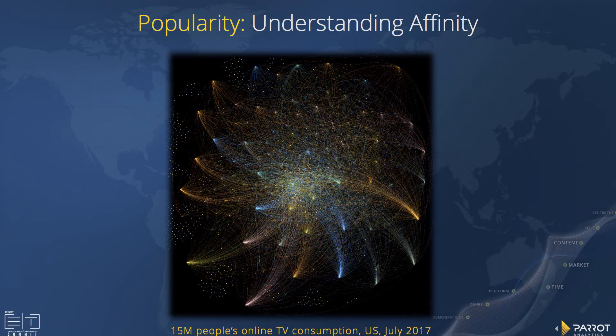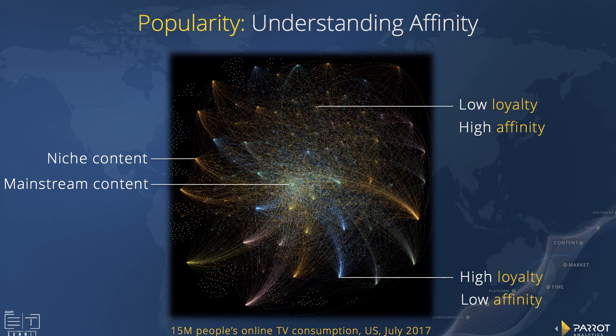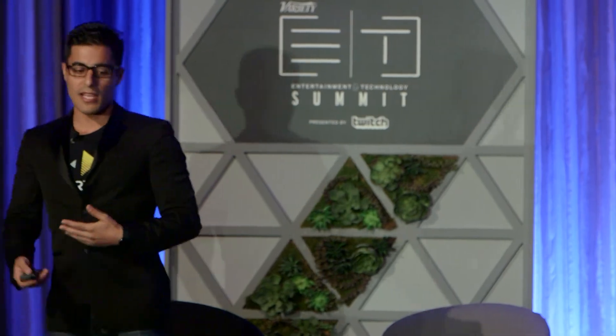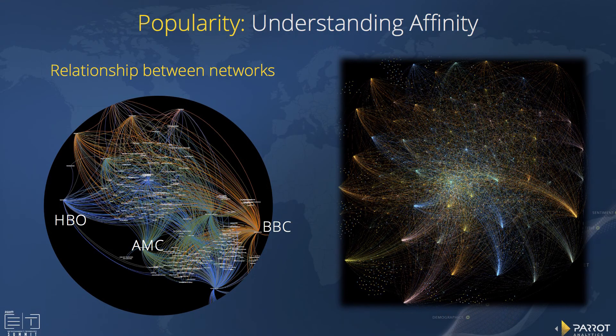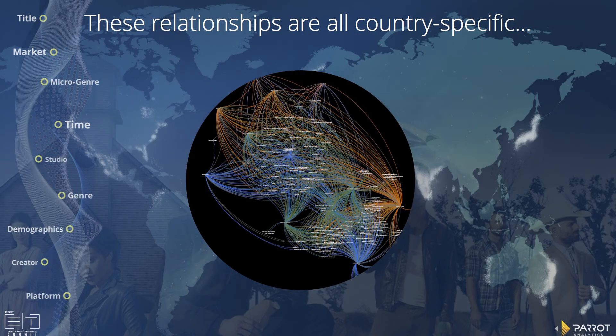This is a cluster network — what 50 million people's online TV consumption in the United States in July looks like. Every dot on this network is a TV show. The brighter the dot, the more people consume that TV show. The lines between the dots indicate when people finish watching one TV show and move on to the next. We can now start to understand niche content versus mainstream content, and develop metrics like loyalty versus affinity. What does it mean if you introduce a show into the network or take one out? If you're programming an SVOD platform or a linear network, what impact does losing one of your shows have on the network and on other shows around it? At a macro industry level, we can understand the relationship between networks — how people move from watching certain networks' content to other networks' content. And all of these relationships happen on a country-specific basis, with different shows, different networks, and different relationships within every country on the planet.